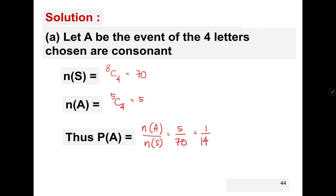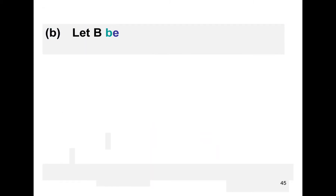The five here refers to all the consonants from the word COMPUTER: C, M, P, T, and R — five consonants. We only have to choose four out of five. So the answer for question (a) is 5 over 70, which equals 1 over 14.